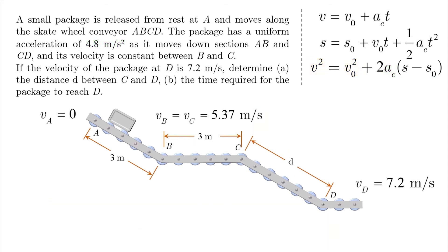In part B, the question asks for the time required for the package to reach D. And since we have different accelerations, the times from A to B, B to C, and C to D have to be calculated separately, and then added up to find the total time from A to D.